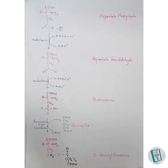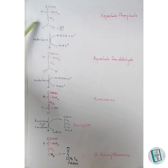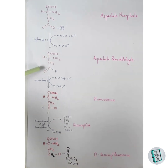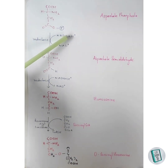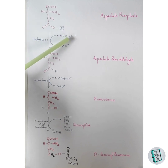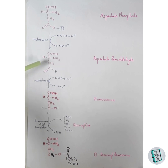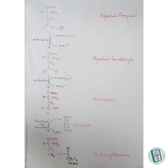In the second reaction, aspartyl phosphate undergoes reduction to form aspartate semi-aldehyde. Here NADH₂ donates one hydrogen for the release of the phosphate group, and the second hydrogen joins with the carbon to form aspartate semi-aldehyde. In the third step, reduction also occurs — aspartate semi-aldehyde undergoes further reduction.